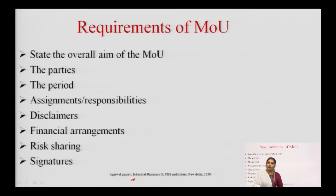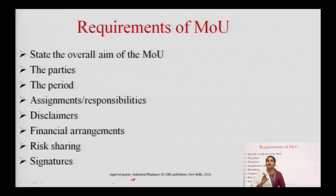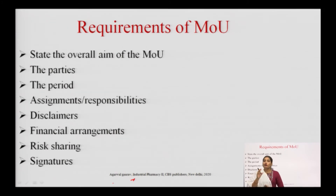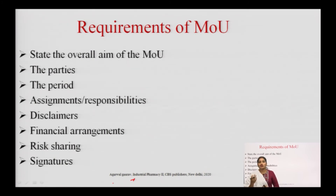To summarize the requirements of the MOU: state the overall aim; parties' information; the period — the duration of time; assignments and responsibilities — personnel assigned should know and be committed to their responsibilities; the financial information on which the MOU is prepared; the proportion of risk sharing — how profit and loss are shared; and signature of both parties.